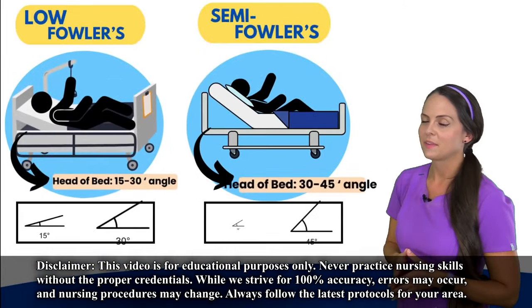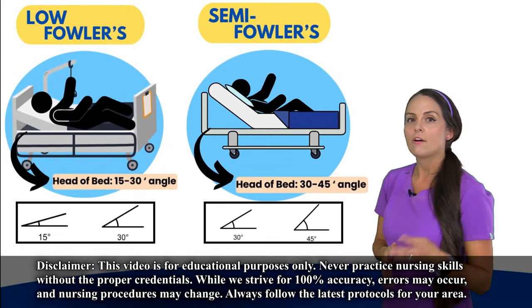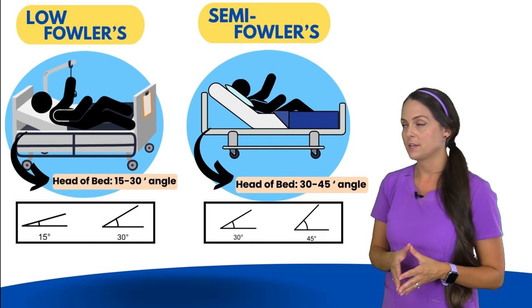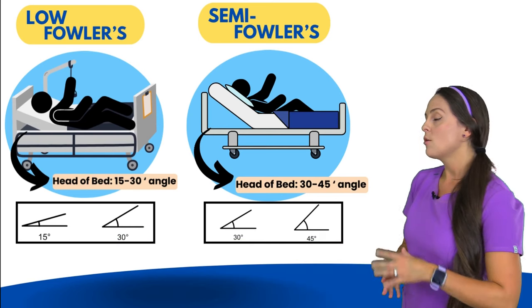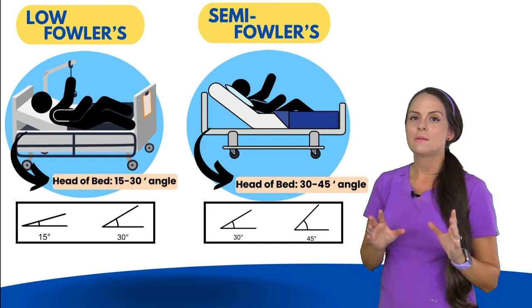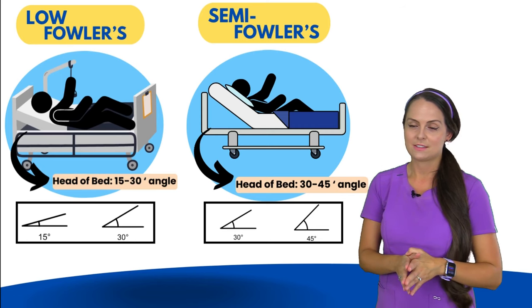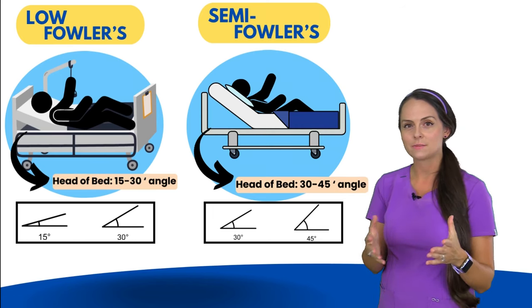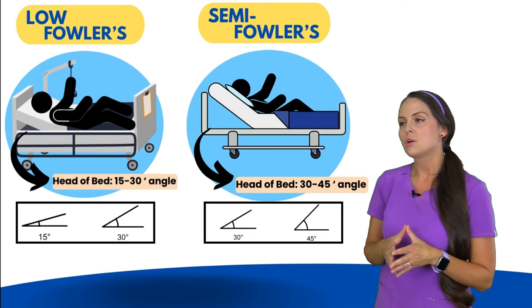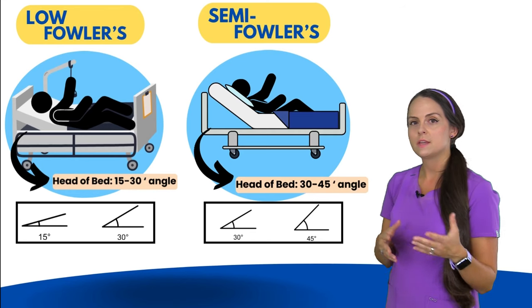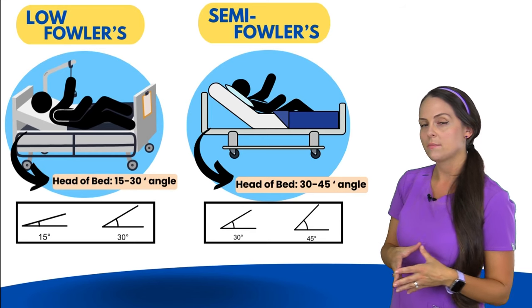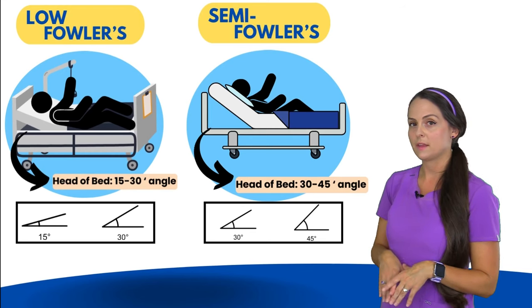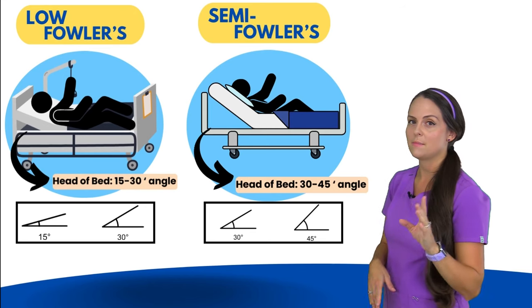Let's talk about the Fowler's position. There are about four of them, and the name of these positions comes from a surgeon. With these positions, it's all about the angle of the head of the bed, so make sure you're paying attention to those angles because that's where you're going to be tested. Your patient is going to be in the bed, lying on their back, and their knees can be flexed or extended.